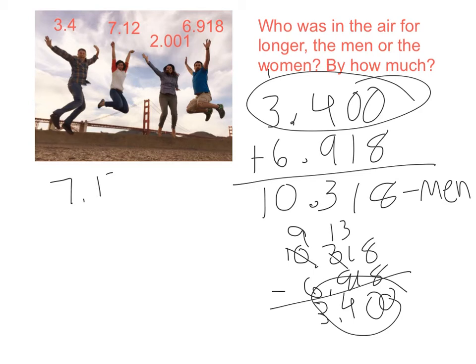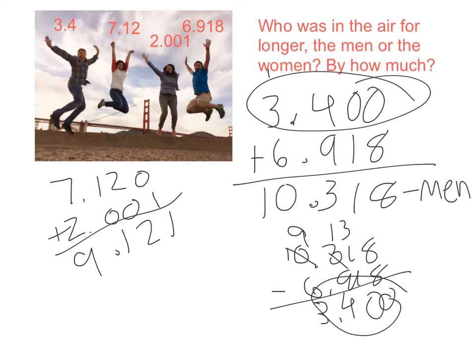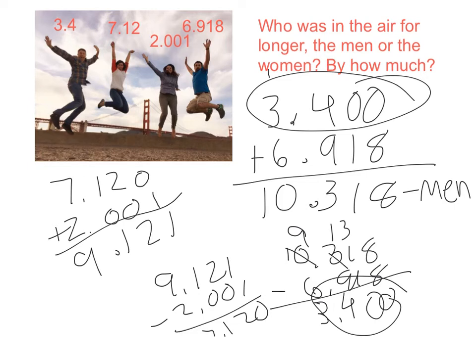Now I need to add up Jess and Crystal. So 7.12 plus 2.001. I need my place value there: 1, 2, 1, 9 — giving me 9.121. To check that: 9.121 minus 2.001 gives 7.12. So I know that the combined times are the correct response.